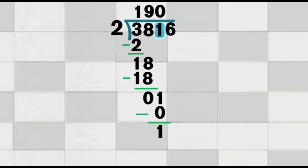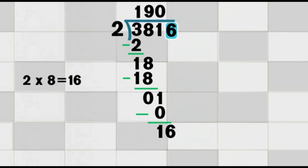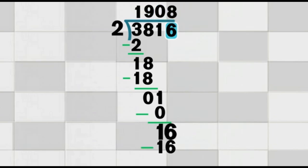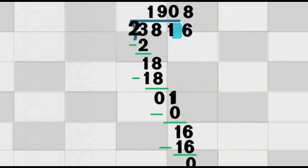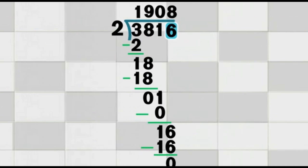Bring down the last digit in the dividend, which is 6. We now have the number 16. We ask: how many times does 2 go into 16? 2 times 8 equals 16 — that's perfect. We write 8 on top of the bracket, above the 6. Now the final answer on top is 1,908. Multiply: 8 times 2 equals 16. Subtract: 16 minus 16 equals 0. There are no digits left to bring down and no remainder. 3,816 divided by 2 equals 1,908.